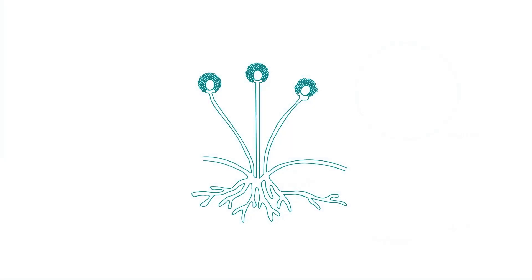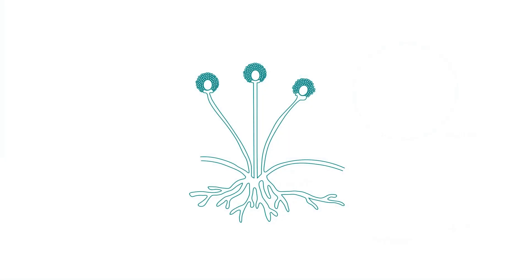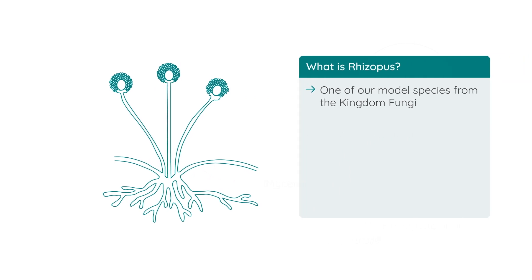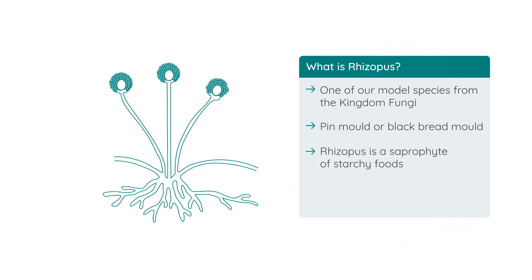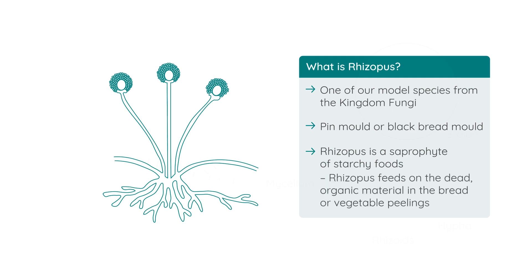Now we will focus on the structure of Rhizopus, which is one of our model species from the Kingdom Fungi. Rhizopus stolonifer is a species of fungus more commonly known as pin mold or black bread mold. Rhizopus is a saprophyte of starchy foods like bread, vegetable peelings, and stored fruits like apples and tomatoes.